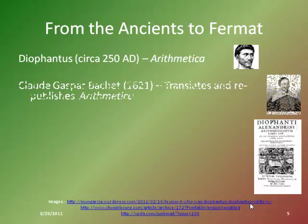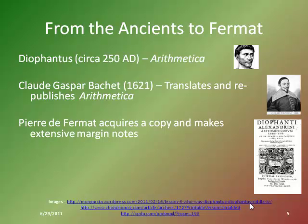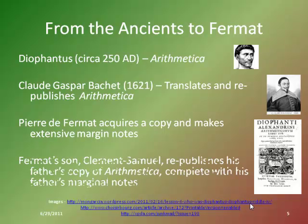A man named Claude Bachet gets hold of Arithmetica and translates it into Latin. It becomes a fairly popular translation, and Pierre de Fermat acquires a copy and starts making a lot of notes in the margins. Some of them were just normal everyday margin notes emphasizing one part of a problem or an aha moment. One of those notes we don't really know about until after Fermat's son, Clement Samuel, republishes his dad's copy of Arithmetica with all of the margin notes in it.